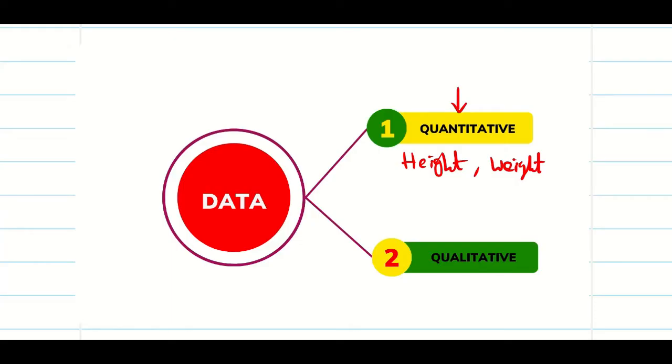So how to find the correlation coefficient when the qualitative data is given? We are going to take the rank of the data and calculate the correlation for the two different items.